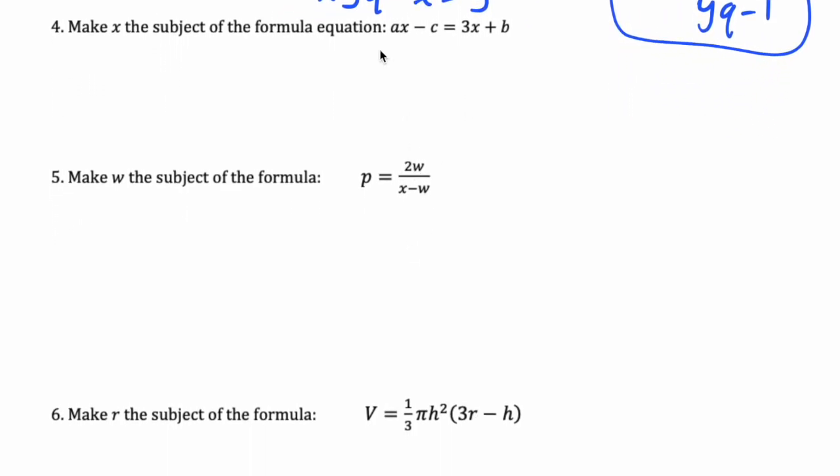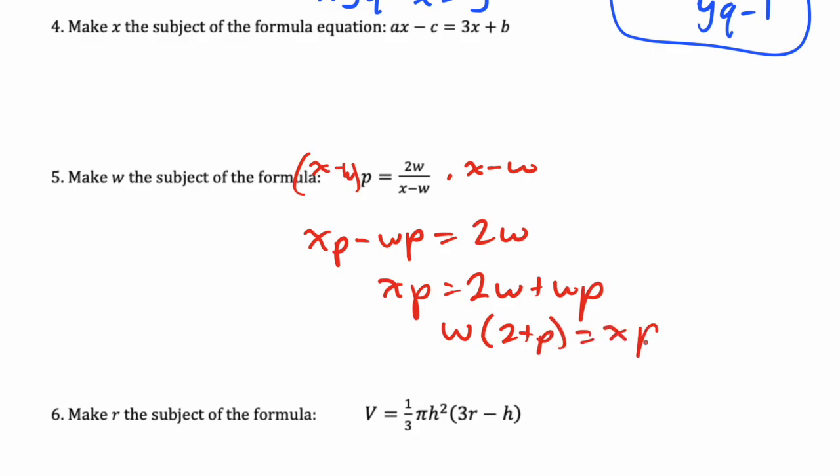We're gonna multiply both sides by (x - w), and don't forget that's in brackets, and we're solving for w. So I'm gonna expand the brackets here and get xp minus wp equals 2w. We want to get our w's on one side so xp equals 2w plus wp and factor out the w: w(2 + p) equals xp, so w equals xp over (2 + p).